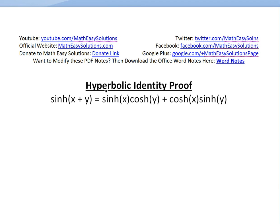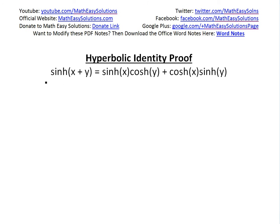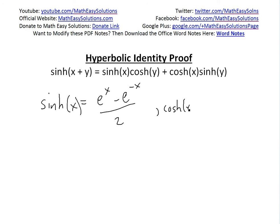In my earlier videos I went over hyperbolic functions, derivatives, and other identities, so make sure to watch those in the related videos and links below. To prove this, we know the definition of hyperbolic sine of x equals e to the x minus e to the negative x, divided by 2. For cosh it's the same but with e to the x plus e to the negative x, divided by 2. We'll plug these definitions into the right-hand side to prove the identity.